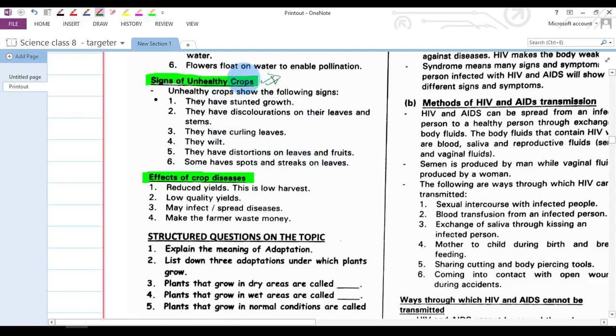In this lesson we shall look at the signs of unhealthy crops. They have the following signs: One, they have stunted growth. Stunted means very slow, little growth, meaning that they grow at a very low rate.